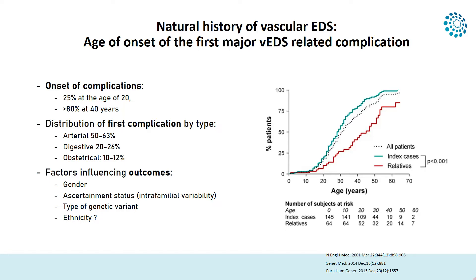There are factors that influence the outcomes of vascular EDS, mainly gender, with a more pejorative outcome in young men. The ascertainment status also matters — whether you are the first person of your family presenting or a relative — because usually the most severely affected person of a family will be seen first in hospital. The type of genetic variant also has a significant influence on the outcome of vascular EDS.